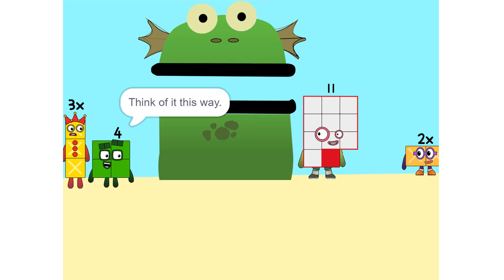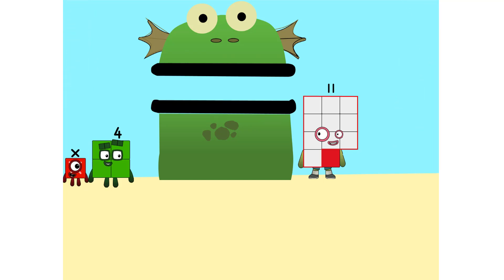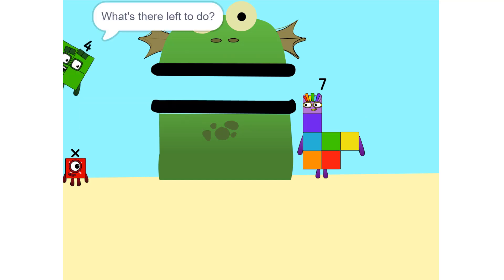¿Por qué? Piénsalo de esta manera. Estás restando 2X de cada lado. Entonces, ¿sería solo una X? Correcto. Ahora haz lo mismo conmigo, 4. 11 menos 4. ¿Qué queda por hacer? X es igual a 7. Así que soy 7.